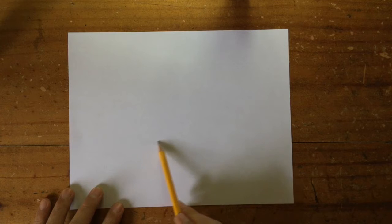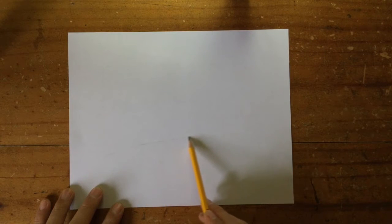Next, I'm going to sketch out the landscape that I'm going to draw. I'm going to start with a curving line at the bottom, something like this. I better press a little bit harder now so you can see it.